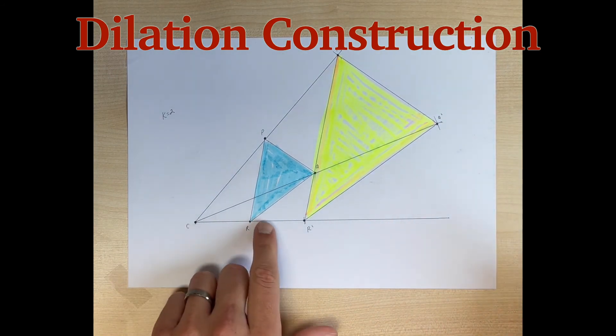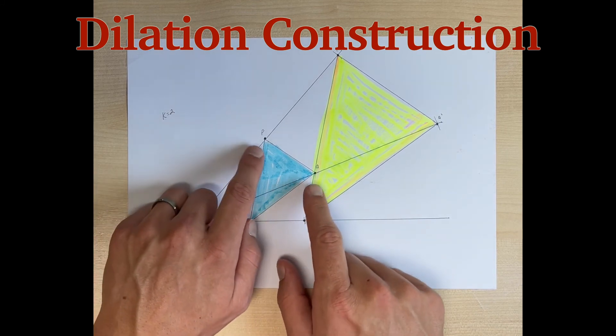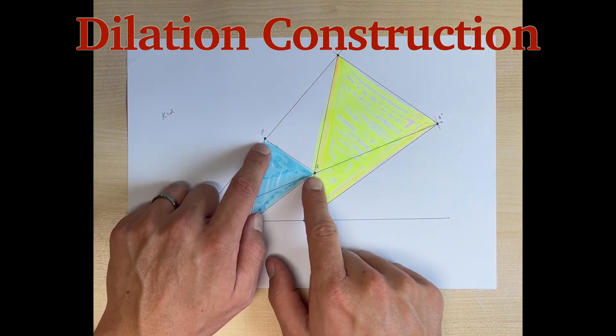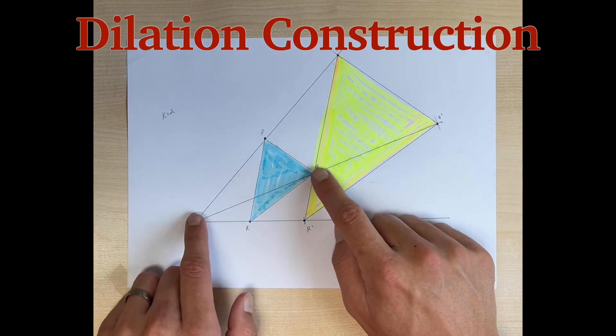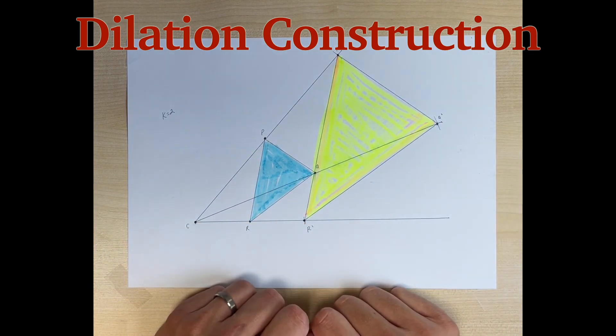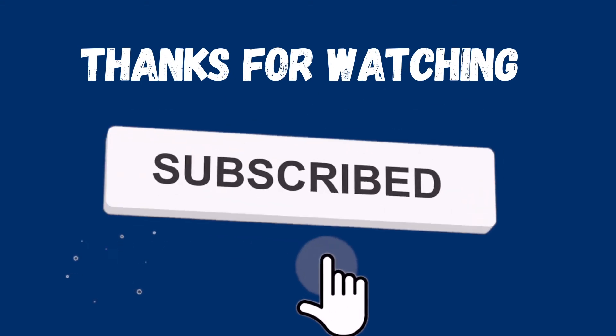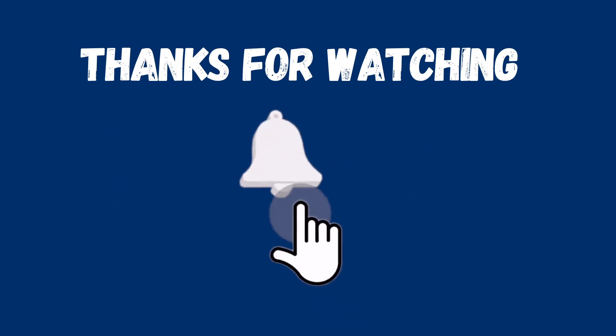We started off with triangle PQR, and we dilated triangle PQR with a scale factor of 2, which essentially means we're going to take each of its sides and double them. That results in our triangle P prime, Q prime, R prime. We'll see you next time.